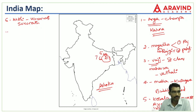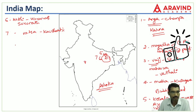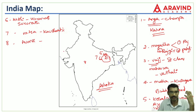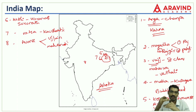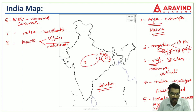Up to six Mahajanapadas we have now seen. The seventh one is Vatsa, whose capital city is Kaushambi. The eighth one is Avanti, located in the central part of India. Like Magadha, Avanti also had two capitals: Ujjain (the northern capital) and Mahishmati (the southern capital).